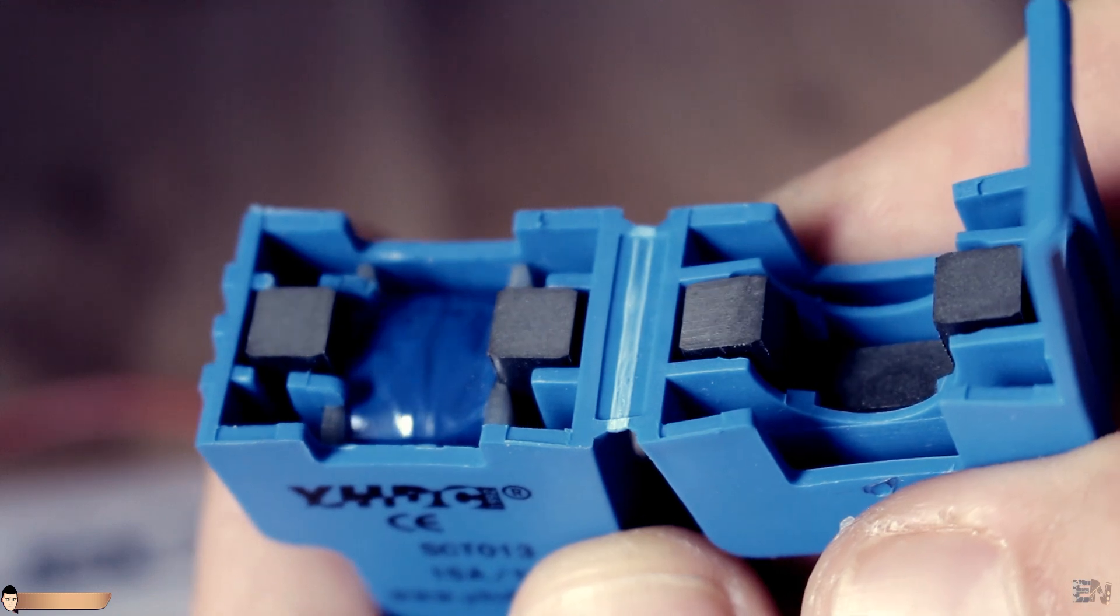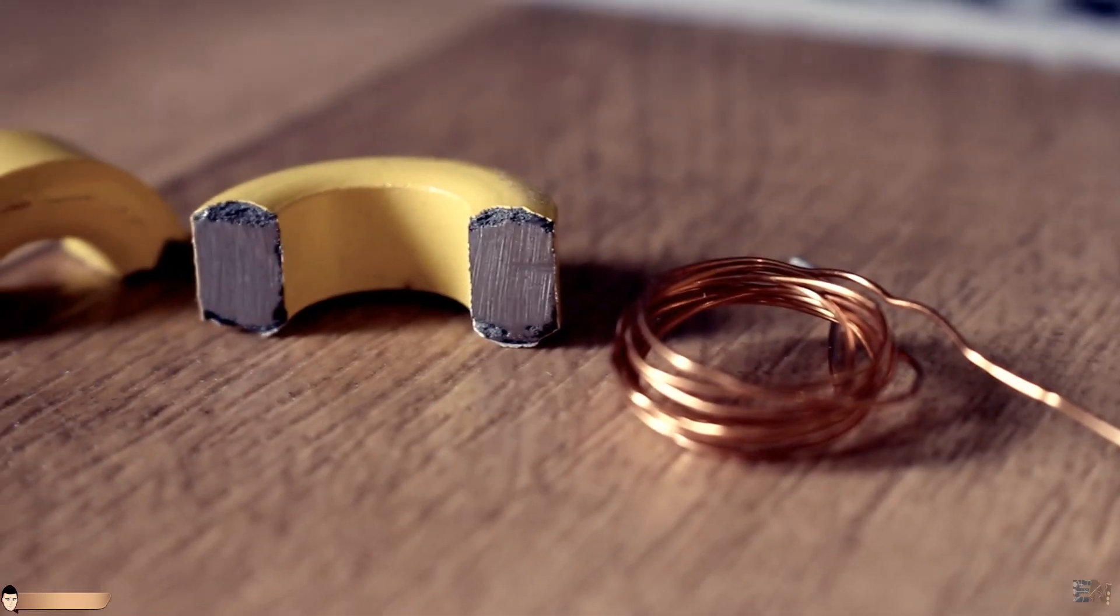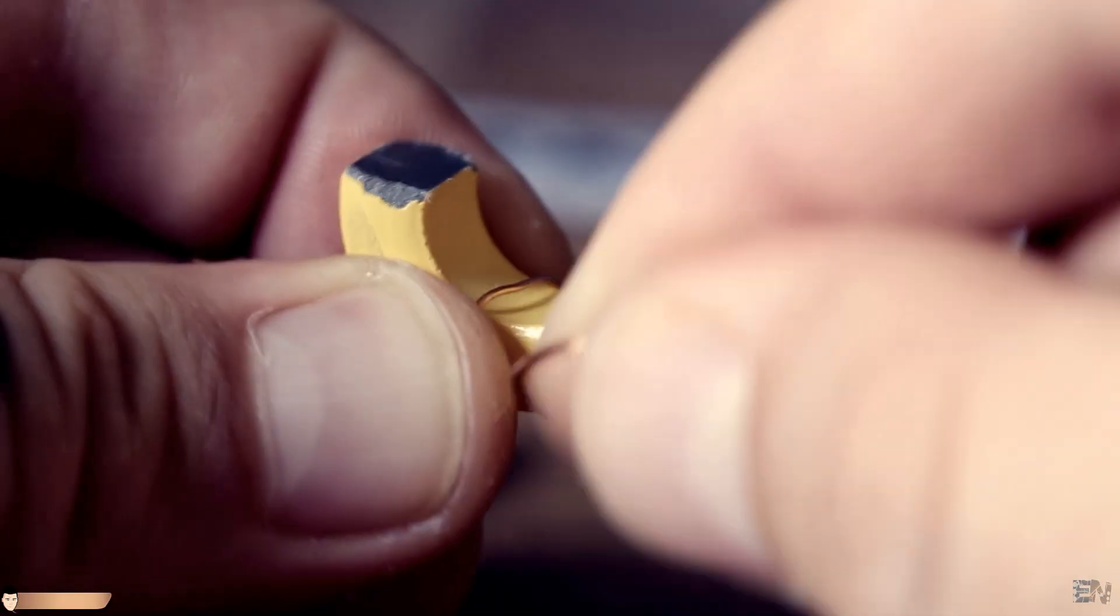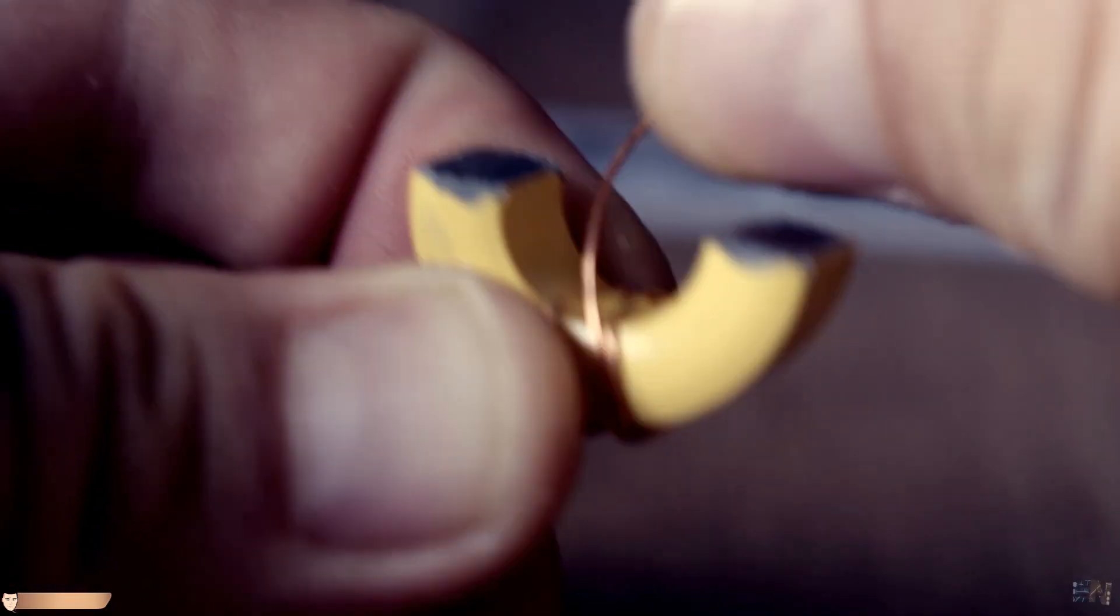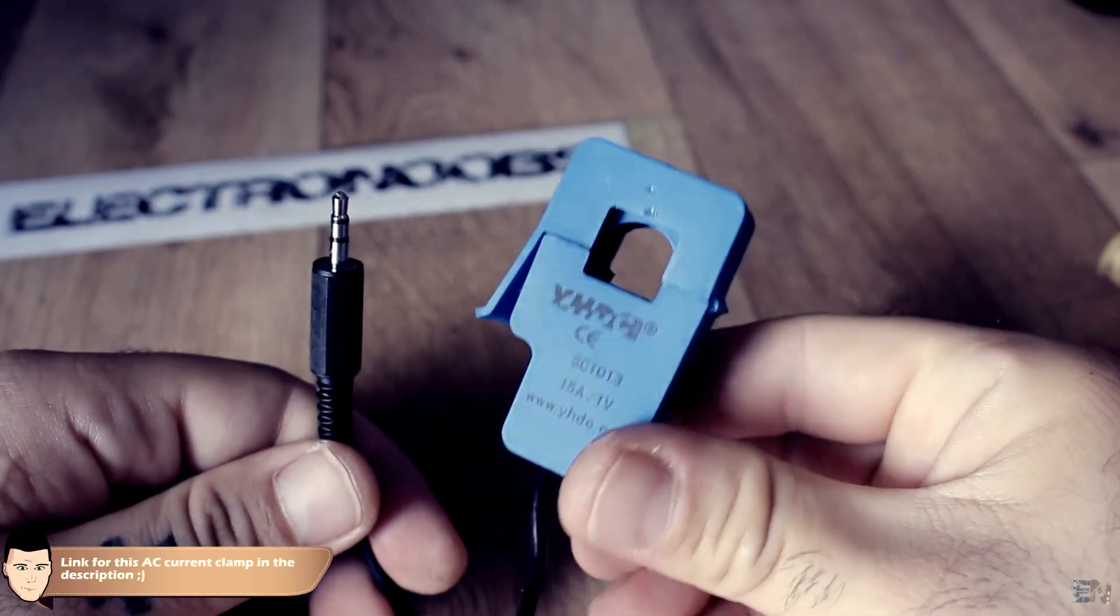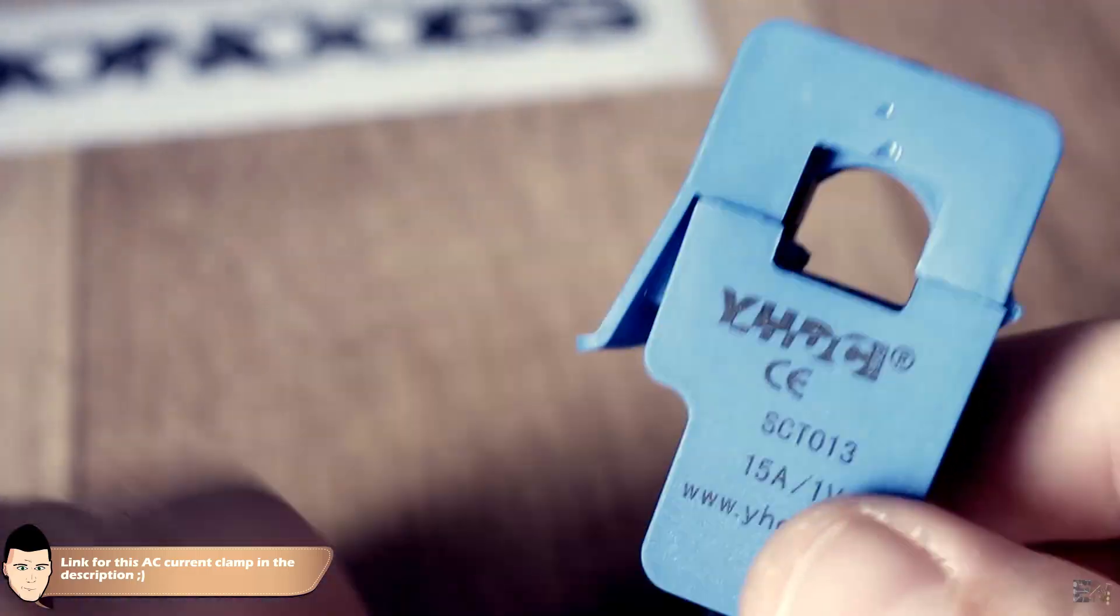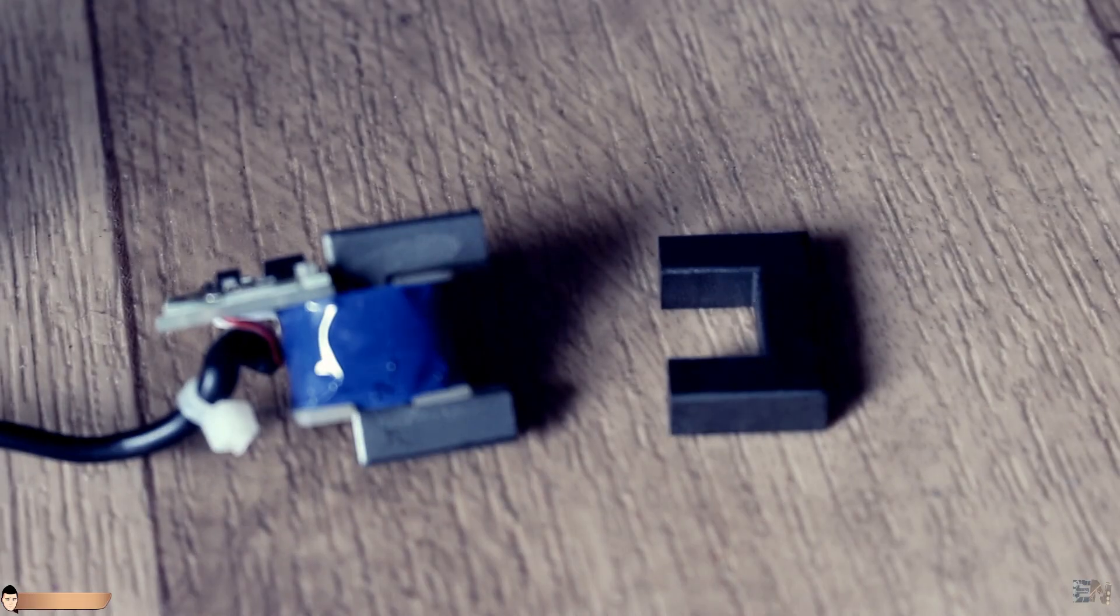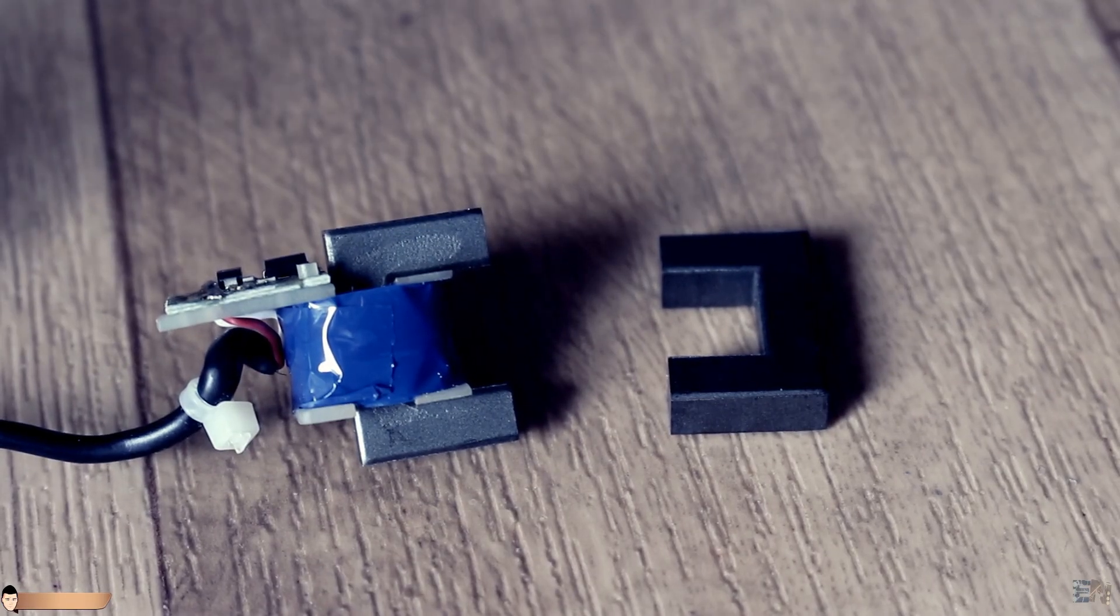Let's first see how to build our own AC current probe. All we need is a transformer core and some copper wire to create our windings. You could buy this kind of module directly wound for a few dollars, just like this. Link is in the description.